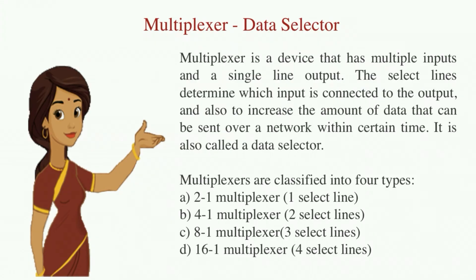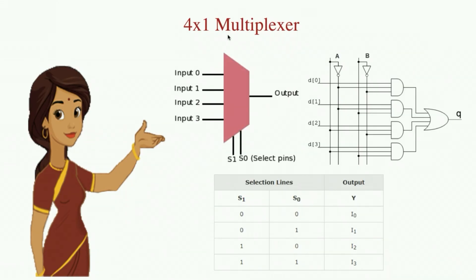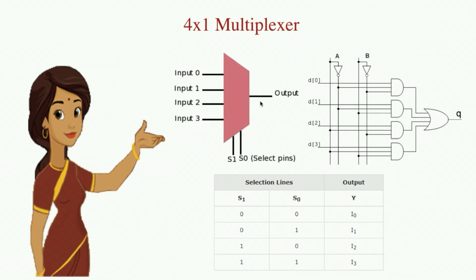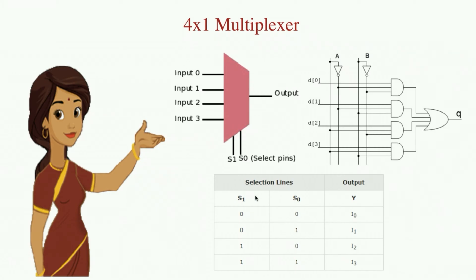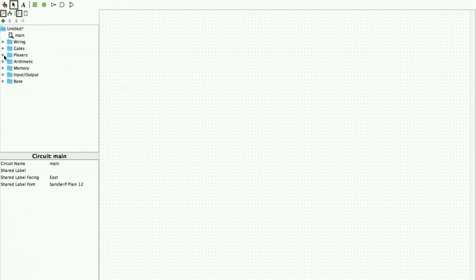We will be learning about a four-to-one multiplexer. This is the diagram of a four-to-one multiplexer — there are four inputs, two select lines, and one output. This is the logic representation of the same diagram, and this is the truth table. We will be checking out this circuit using Logisim software and will verify if the truth table is satisfied.